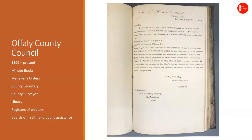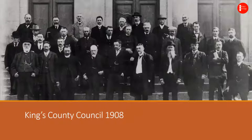The Local Government Act of 1898 established the county and city councils and transformed local government administration. The archives of Offaly County Council, which had its first meeting in 1899, contain the minute books, manager's orders, records of the county secretary and county surveyor, records of the library development, registers of electors and many more records. This is the first photograph we have of Kings County Council, but it dates from 1908 — we don't have an image of the first council meeting, which was held on the 22nd of April 1899.